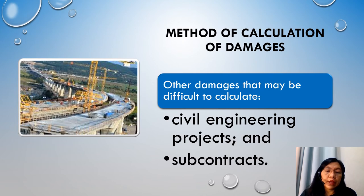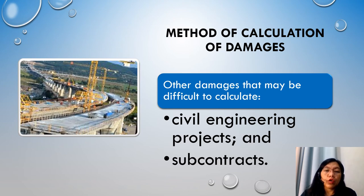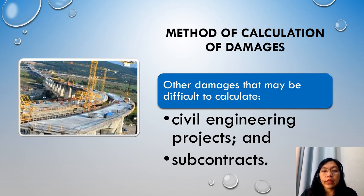Other damages that may be difficult to calculate include civil engineering projects and subcontracts. It is more difficult to calculate damages for civil engineering projects such as roads and sewage treatment facilities, because it may be difficult to put a value on the loss incurred — for example, for not having a road upgrade. It may also be difficult for a contractor to calculate the level of damages to be applied within a subcontract, since the delay of a subcontractor must be considered for its impact on overall project completion. The damages may become disproportionate to the value of the works covered by the subcontract, which is why some contractors prefer to enter subcontracts with unliquidated damages.